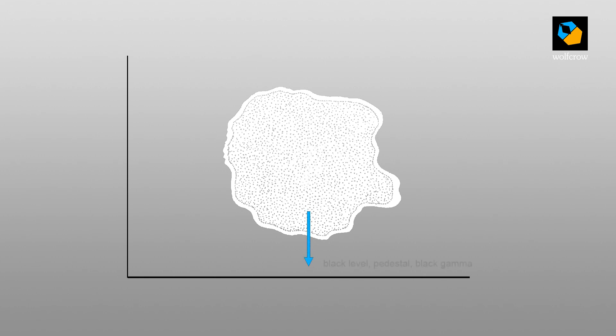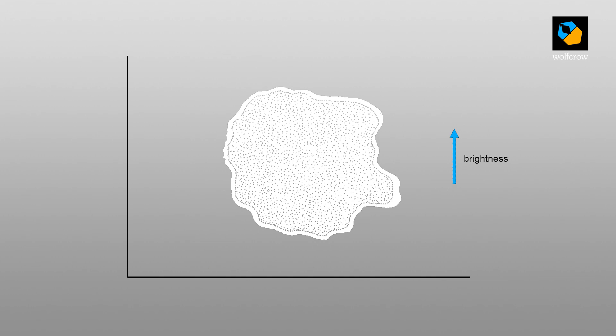What do I mean by all this? Pulling down the bottom is how you manipulate the shadows and blacks. On professional cameras, the settings that help you do this are normally called the black level or pedestal, and the black gamma, etc. The setting that helps you do the same to the highlights is the white level, knee, sometimes gain — this is different from the gain setting or ISO setting, which tackles sensor sensitivity. Raising it entirely is changing the brightness setting.